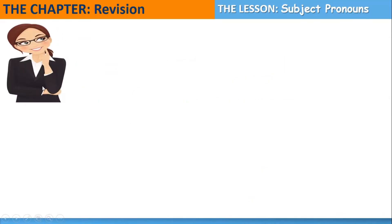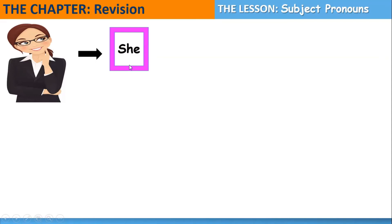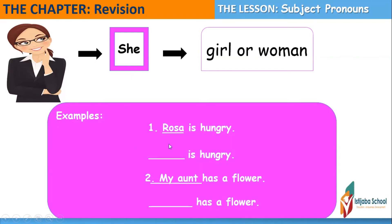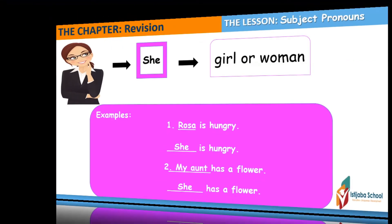This is a girl or a woman. I use the subject pronoun 'she' for a girl or a woman. For example: 'Rosa is hungry.' Rosa is a girl, so I use 'she' to replace the noun Rosa — 'She is hungry.' Sentence number two: 'My aunt has a flower.' My aunt is a woman, so I use 'she' — 'She has a flower.'